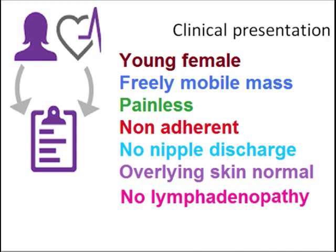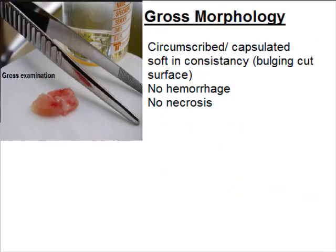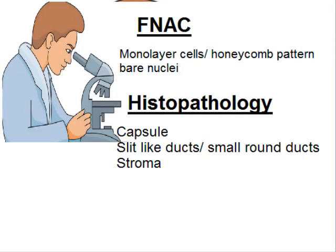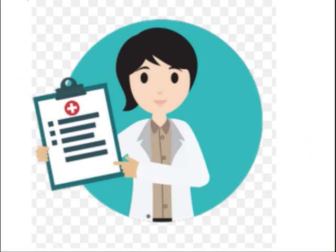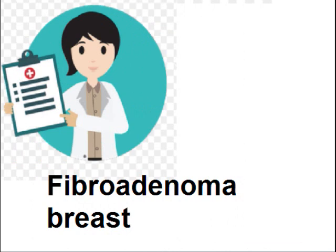No lymphadenopathy, overlying skin is normal. On gross morphology: circumscribed, capsulated, soft in consistency, no hemorrhage, no necrosis — all features of benign tumors. On FNAC: monolayer cells, honeycomb pattern, bare nuclei, and slit-like or small round ducts with stroma. So the diagnosis is made considering all these features as Fibroadenoma of the breast.